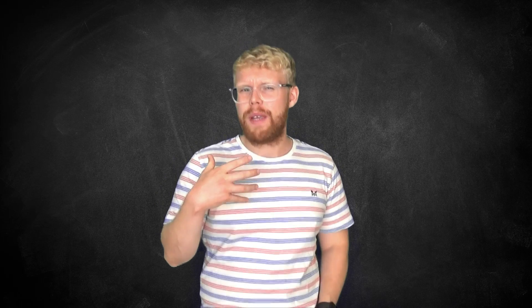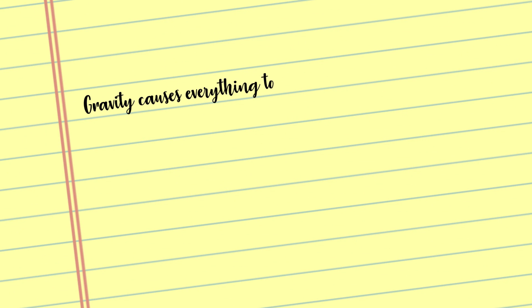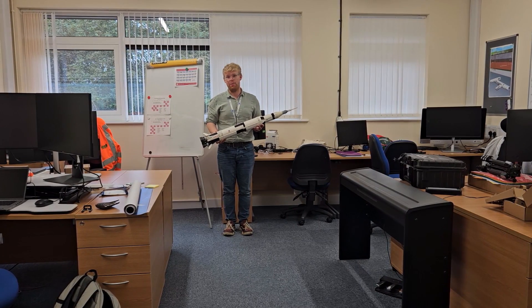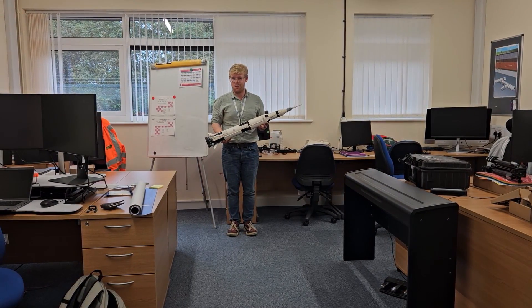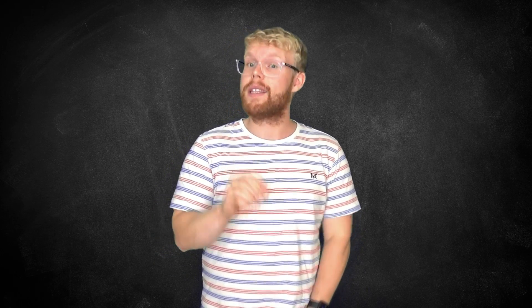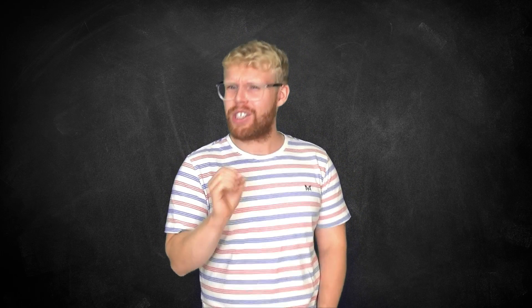But how can we measure the strength of gravity here on earth? Well, gravity causes everything to accelerate towards the ground, whether that be an apple from a tree, your phone that you've just dropped, or a completely invaluable Lego set that your co-worker doesn't know you're holding. The acceleration due to gravity is a good metric for understanding how strong gravity is in your local area, and we can measure this acceleration due to gravity quite easily using a simple pendulum.